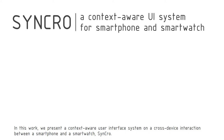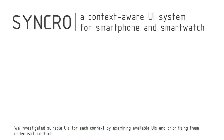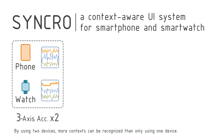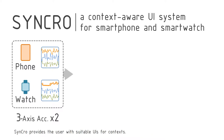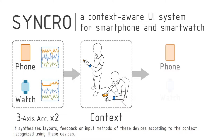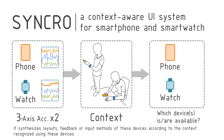We call this system Synchro. We investigated suitable UIs for each context by examining available UIs and prioritizing them under each context. By using two devices, more contexts can be recognized than using only one device. Synchro provides the user with suitable UIs for contexts, synthesizing layouts, feedback, or input methods of these devices according to the recognized context.